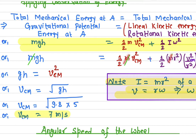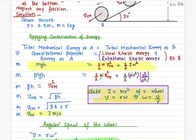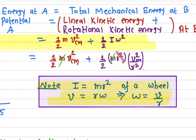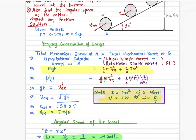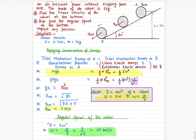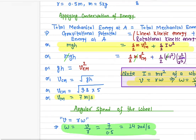Since mass appears in each term, it cancels out. On the left side we have gh. On the right side, the r² terms cancel, and you get v²_cm / 2 plus v²_cm / 2, which adds up to v²_cm. Therefore, v_cm equals the square root of gh. With g = 9.8 and h = 5 meter, the center of mass speed is 7 meters per second.